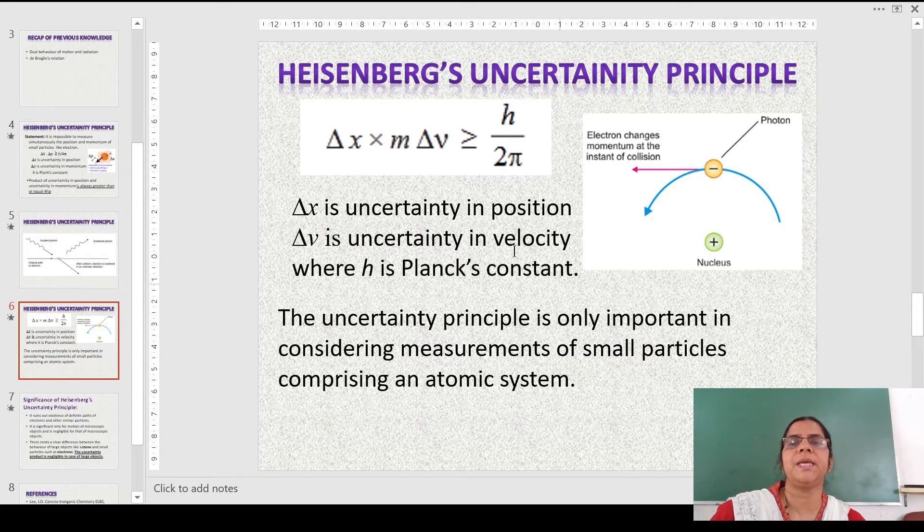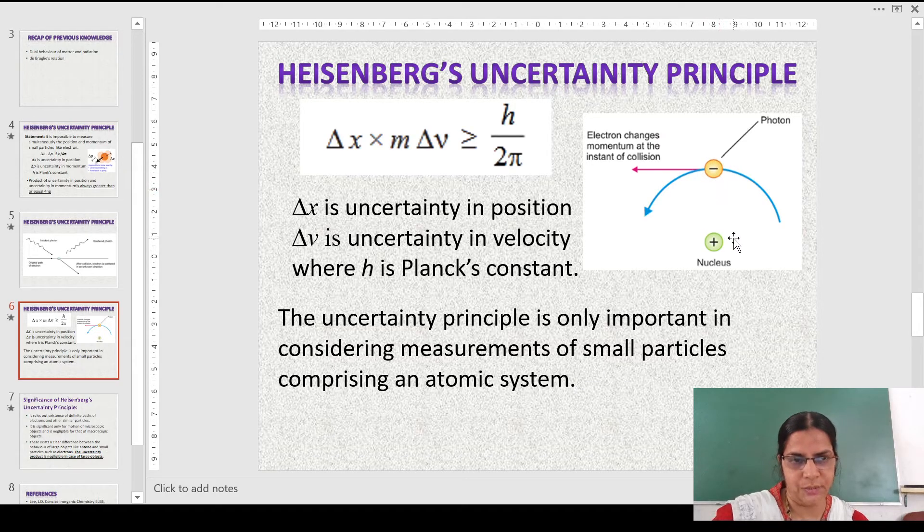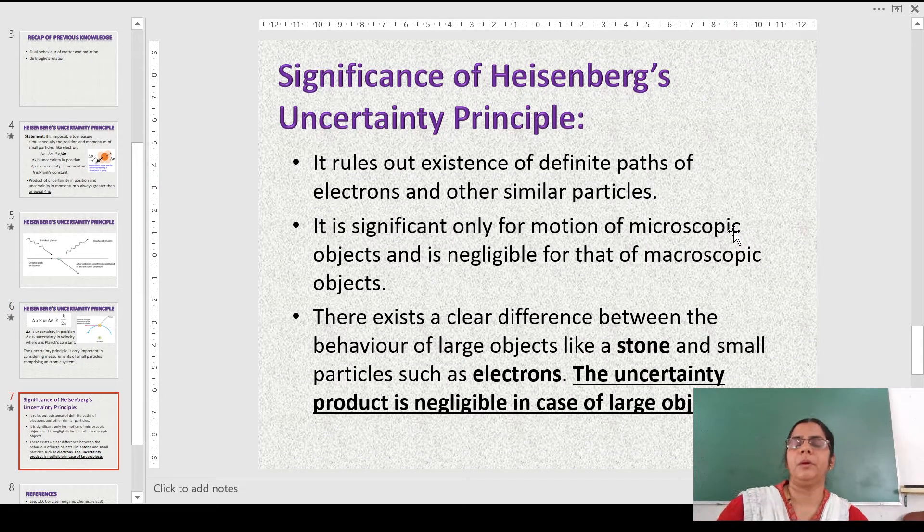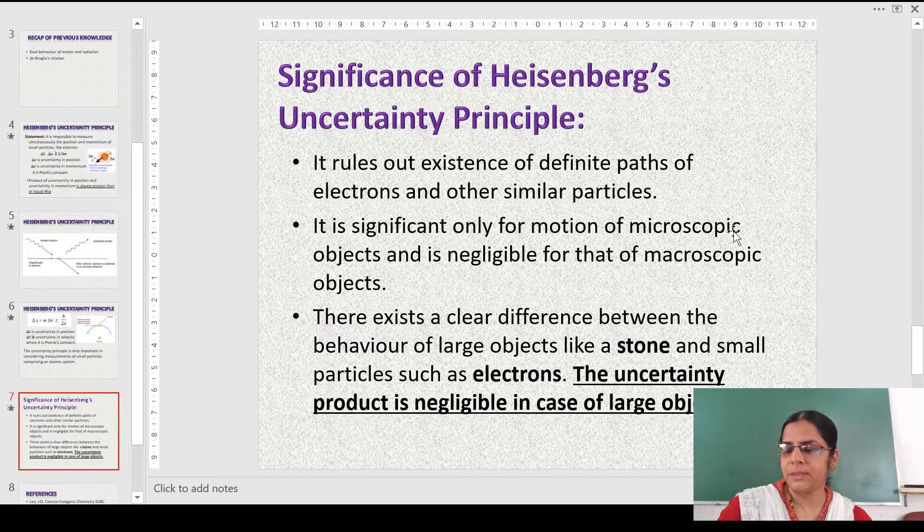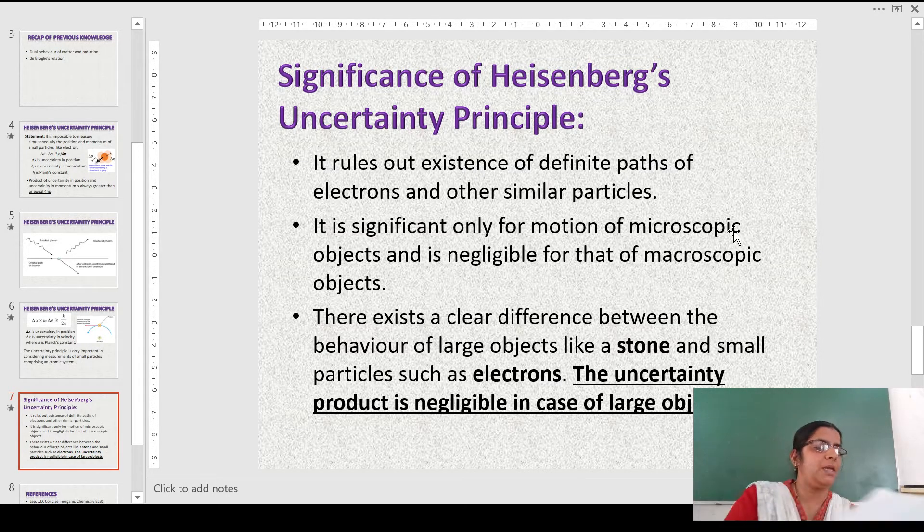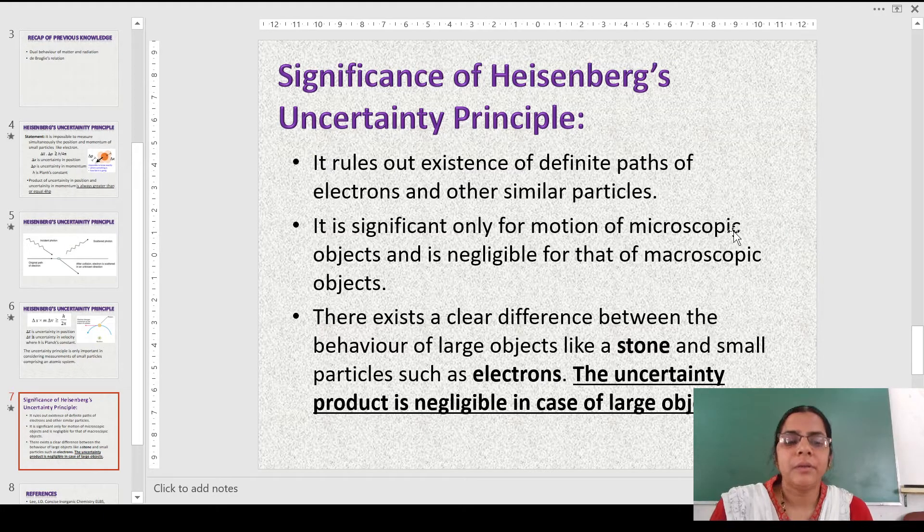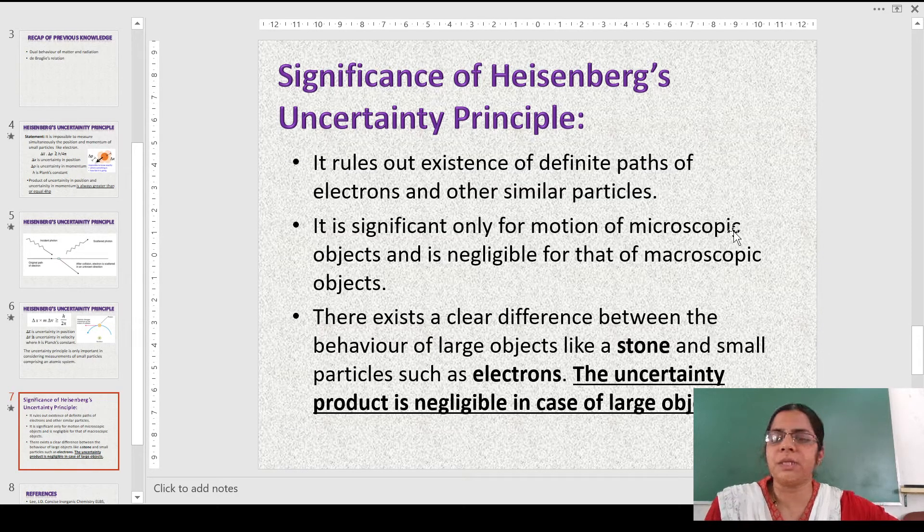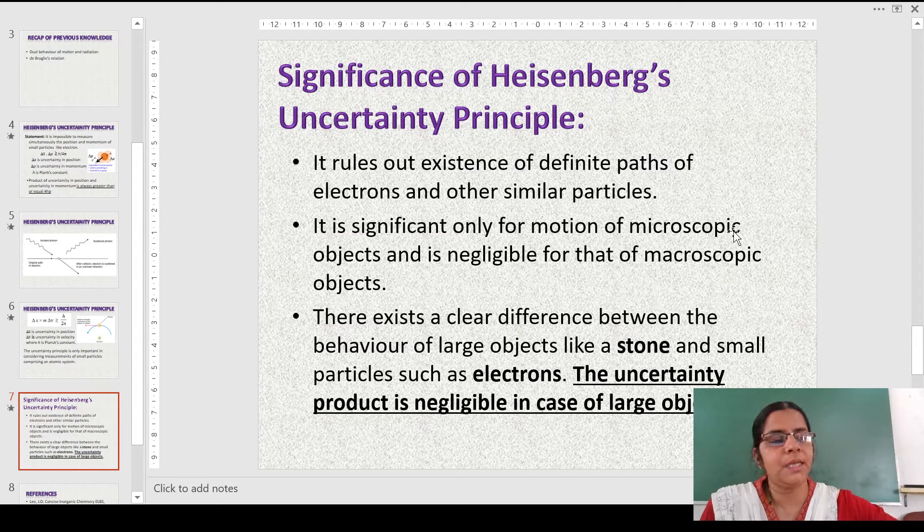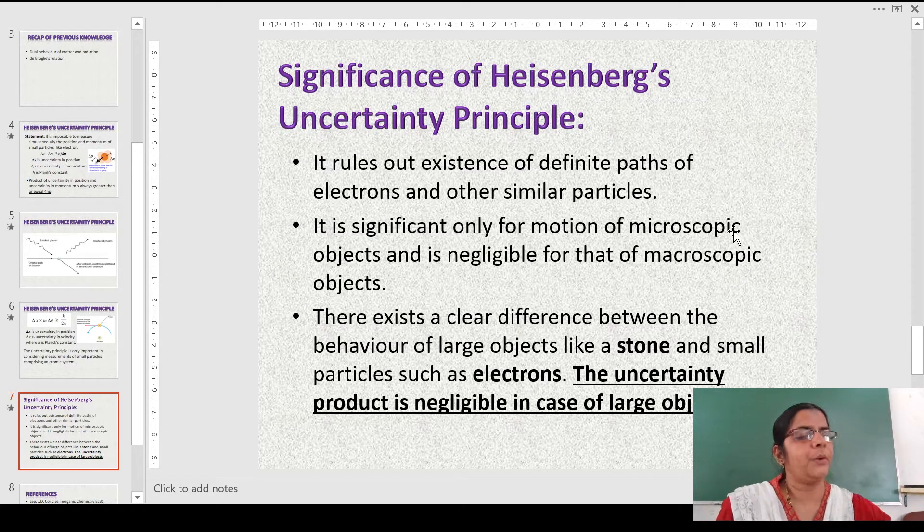Therefore, if we try to measure the position using something like a radiation, either gamma radiation or X-rays, it so happens that the electron may change its position because of the impact of the radiation. So this is what we are saying - that there is uncertainty in measuring its position. So we can say that it is difficult to measure both the position as well as the velocity with proper certainty. If we measure one accurately, there will be uncertainty in the other property.